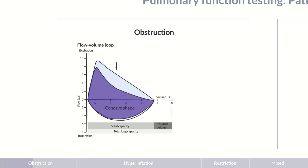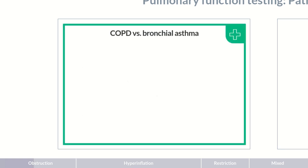In the case of obstruction, further examinations are required to find their cause. The most common causes of obstruction, or more precisely of intrathoracic airway stenosis, are chronic obstructive pulmonary disease, in short, COPD, and bronchial asthma.